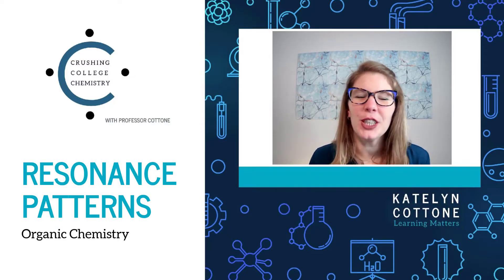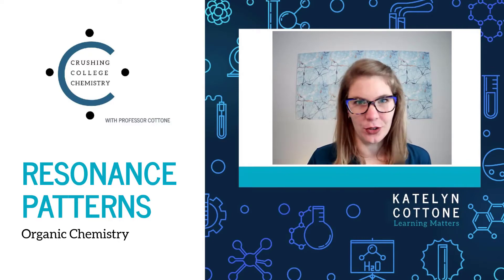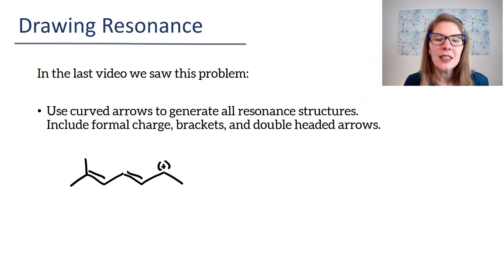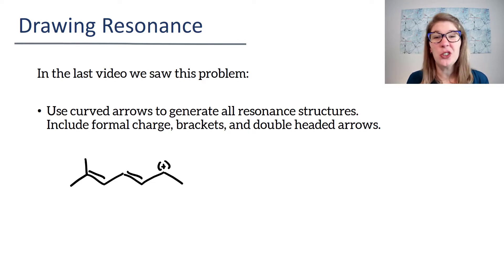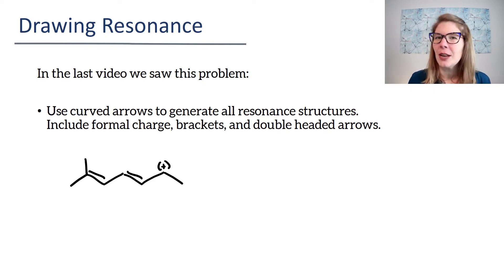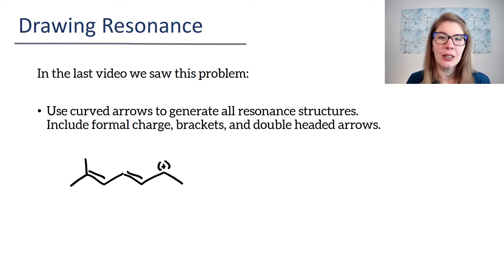Welcome back, students. In this video, we're going to look at resonance patterns, which is finally going to allow us to come up with our own resonance structures. At the end of the last video, I gave you this problem: draw all curved arrows to generate all the resonance structures, including formal charge brackets and double-headed arrows. We didn't even try it because we weren't ready yet. It's really a lot to do to draw resonance structures — it's not like general chemistry resonance structures. Sometimes we don't even know where to begin, but we can learn where to begin when we start looking at patterns. So before we dive into an example like this, let's look at some patterns that help simplify the resonance process.